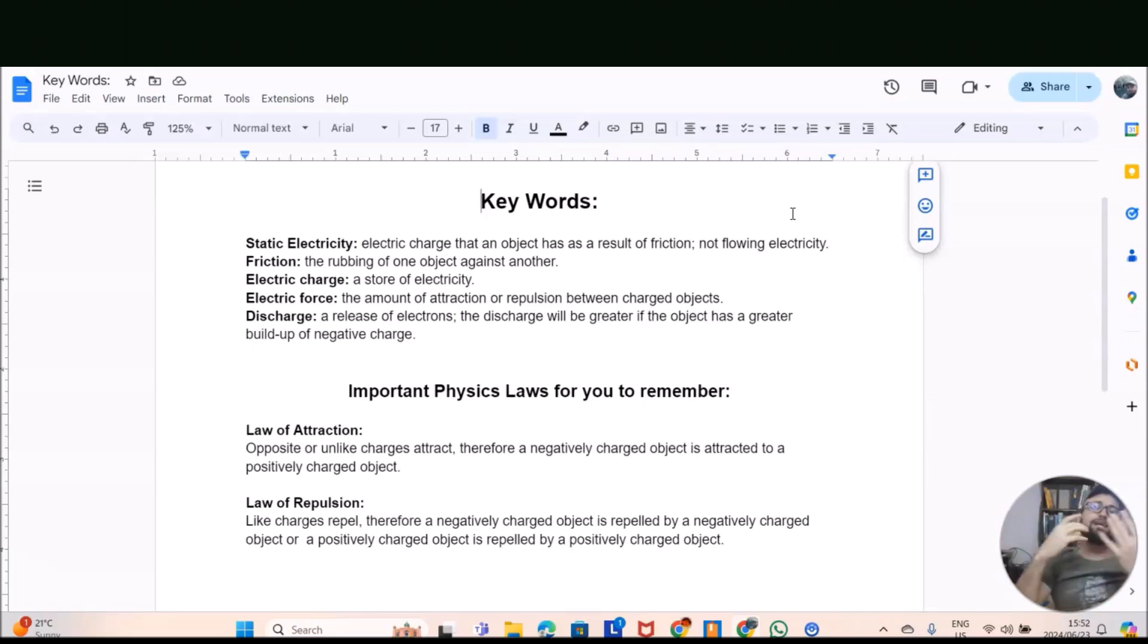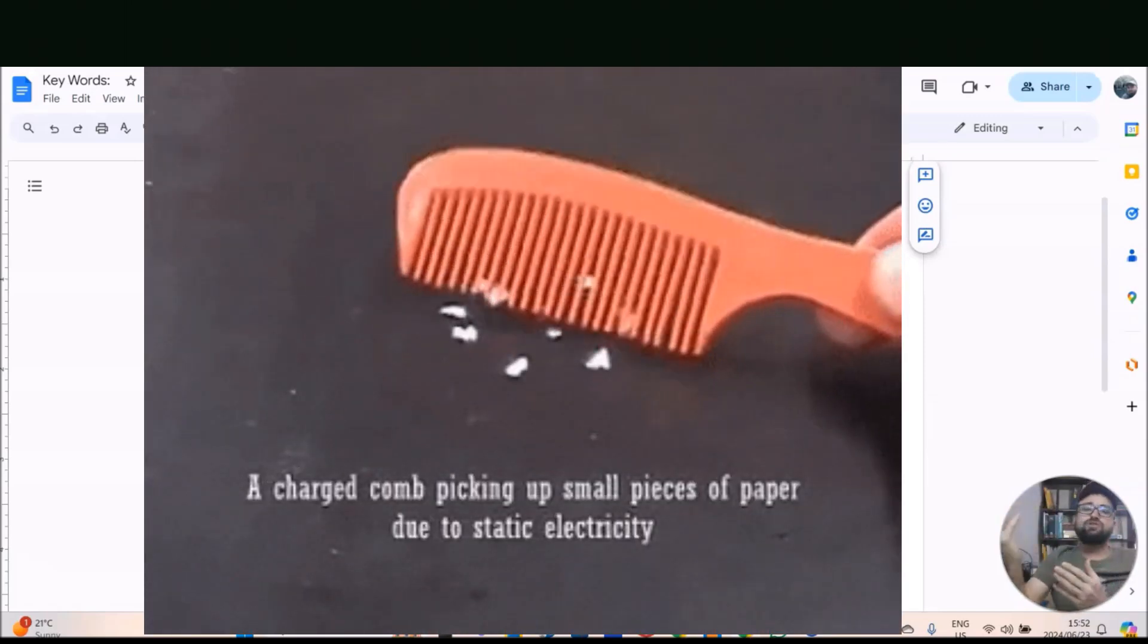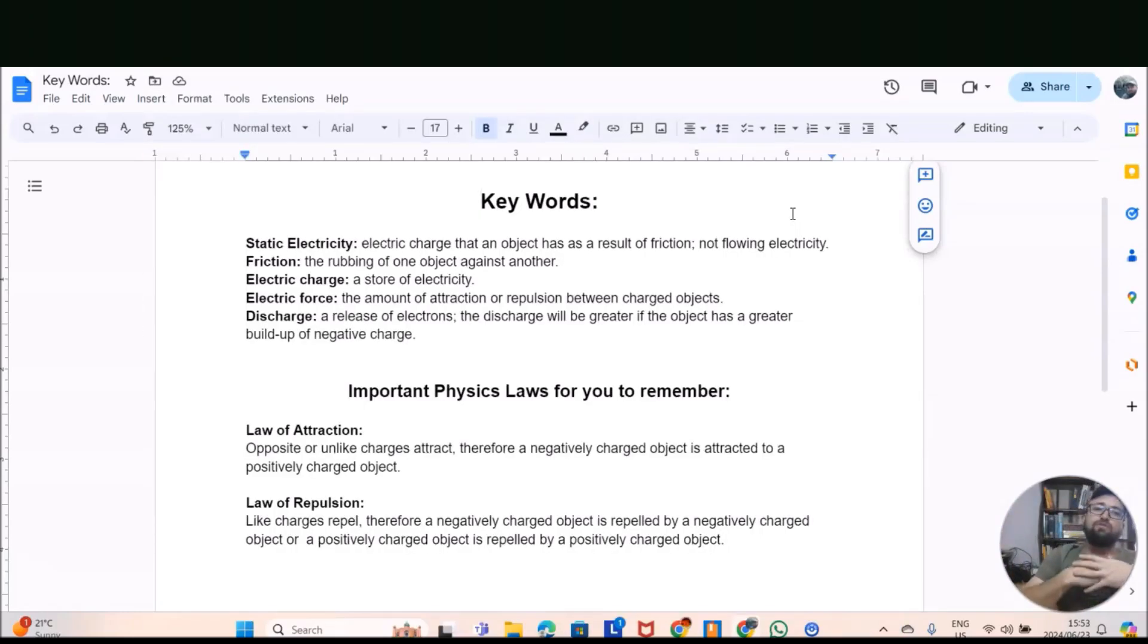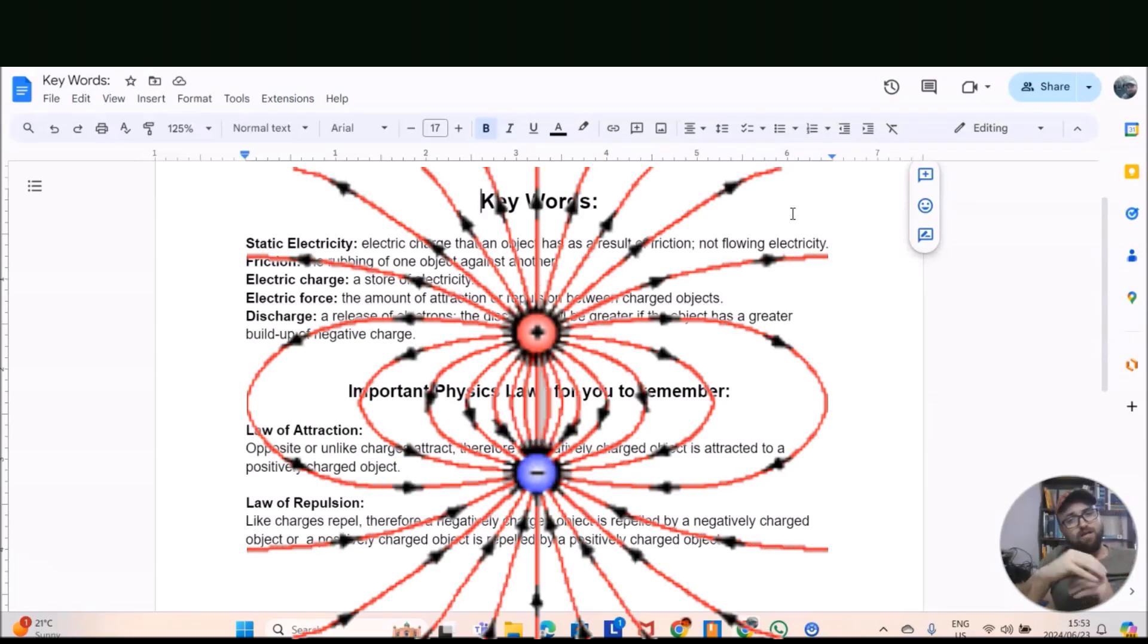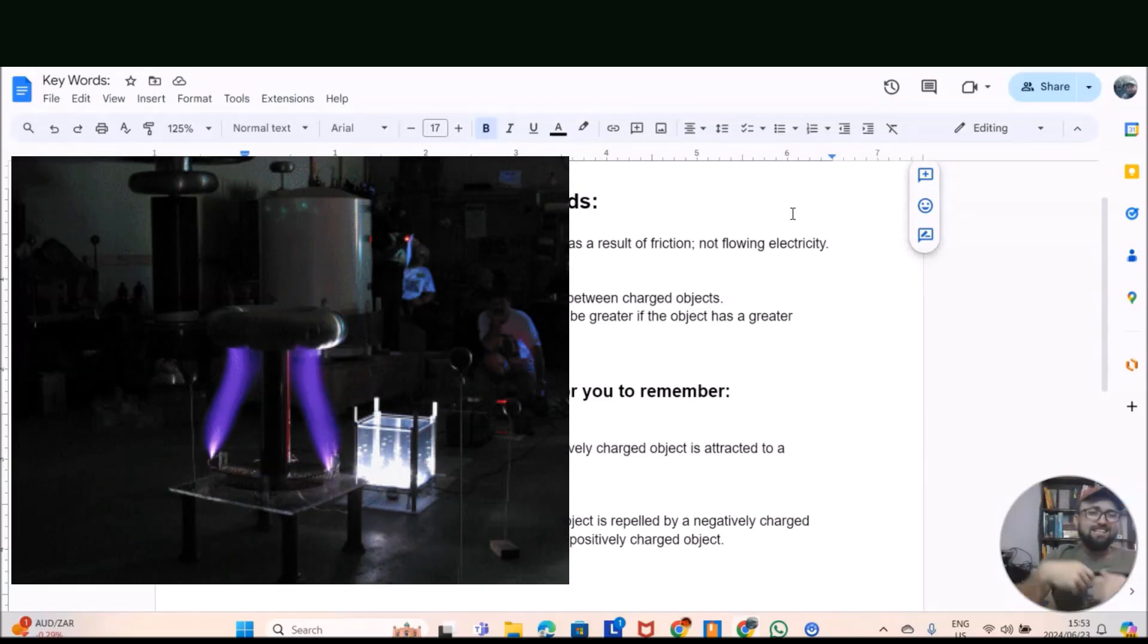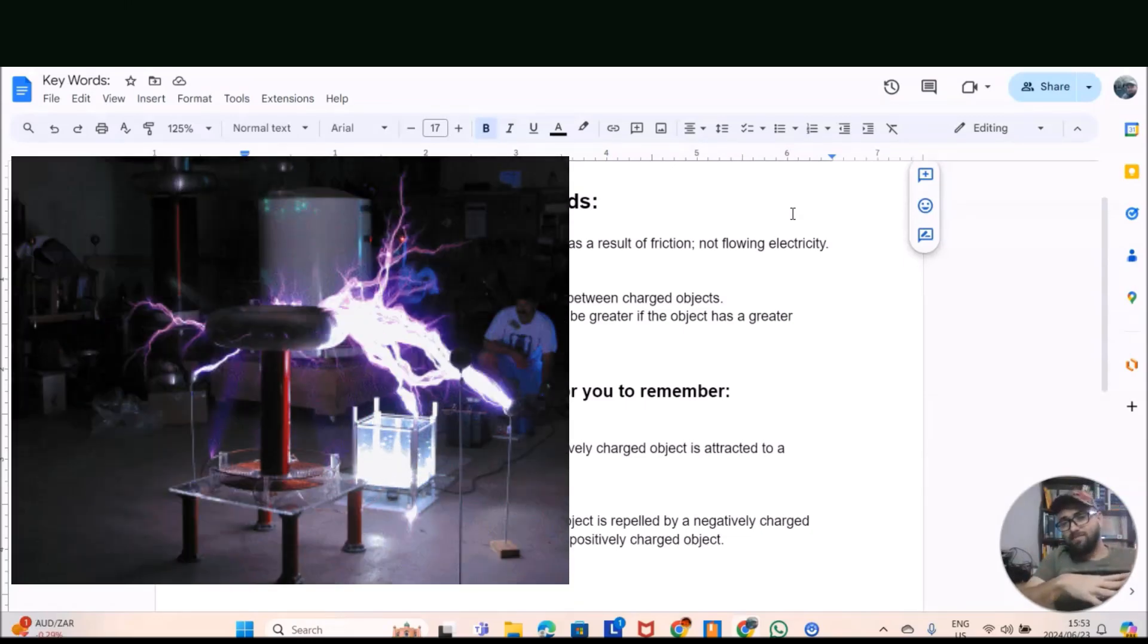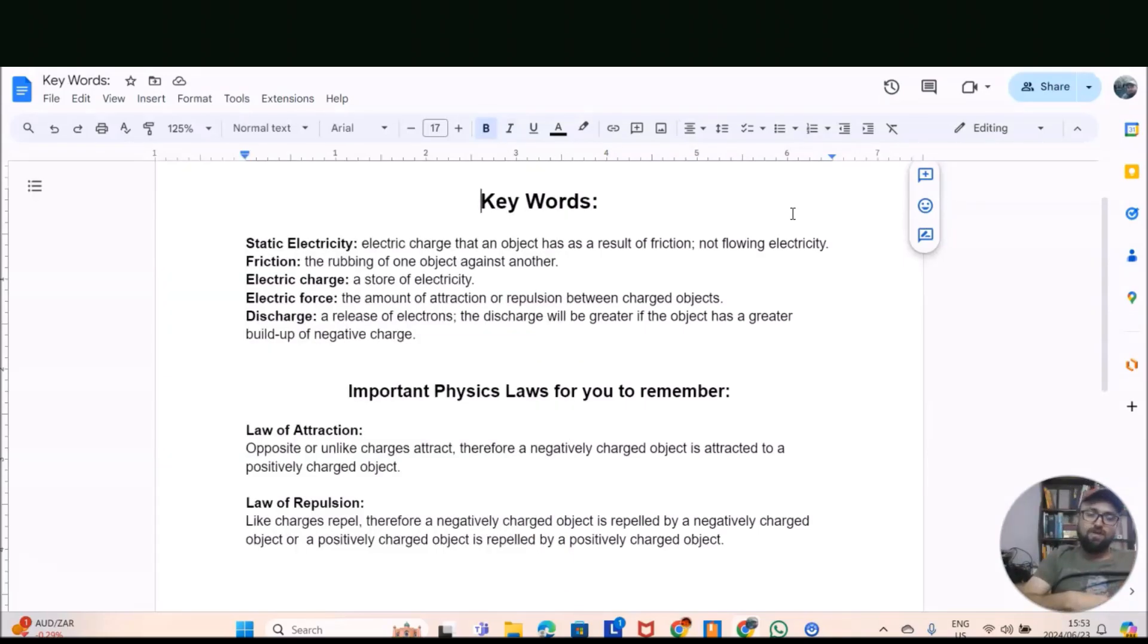With friction we get something called a static electric charge - that is when electricity is stored in one place. Then we get something called electric force - that is the amount of attraction or repulsion between charged objects. And then a discharge - that is a release of electrons. The discharge will be greater if the object has a greater buildup of a negative charge.